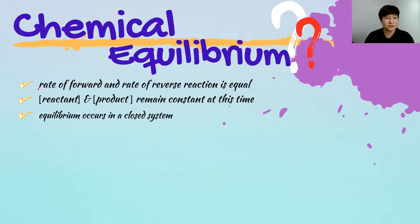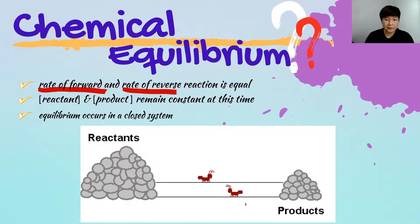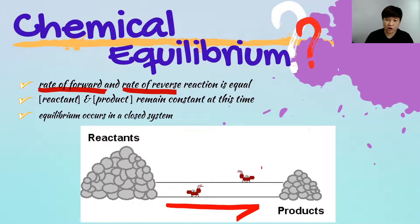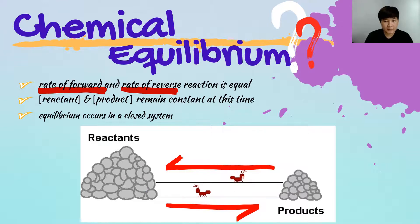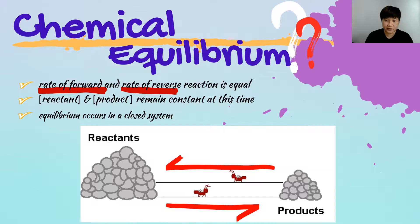Here is a simple example to illustrate what it means for the rate of the forward and reverse reactions to be equal. The N at the bottom takes something from the reactant and changes it to a product, while the N at the top takes something from the product to become the reactant. You can see that both are moving at the same rate — that is what we mean by the rates being equal.